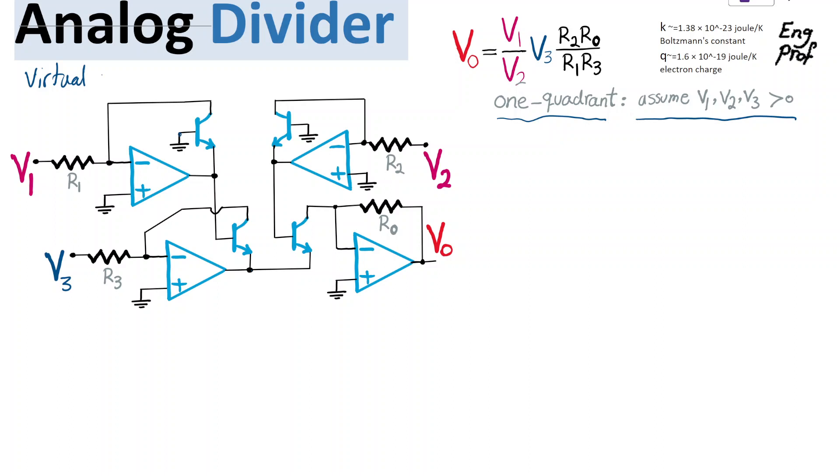As a result, virtual short is valid for all the op-amps, which means that positive input terminal of the op-amp has the same voltage as the negative input terminal.